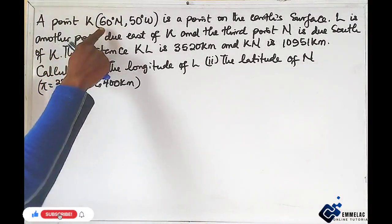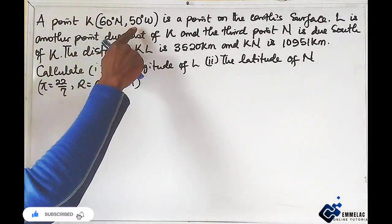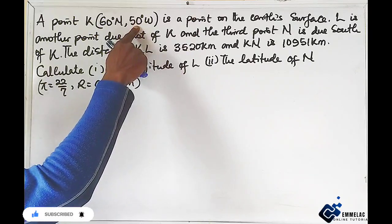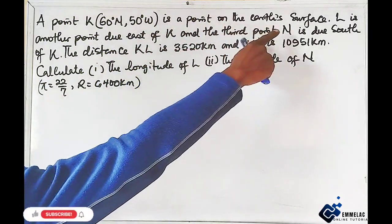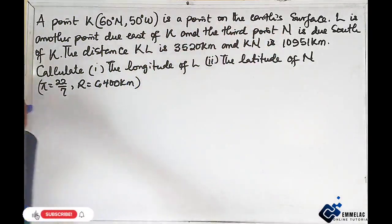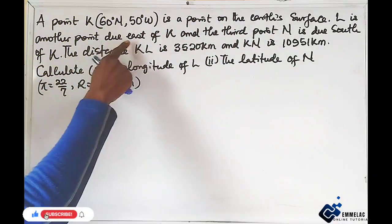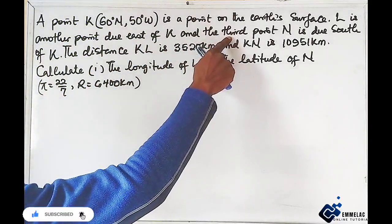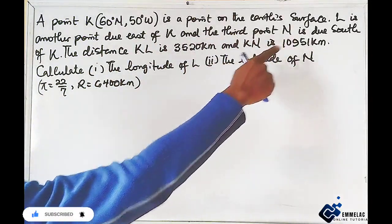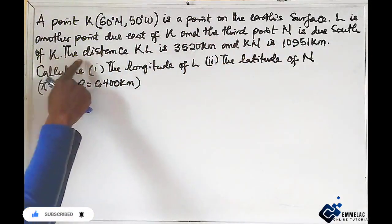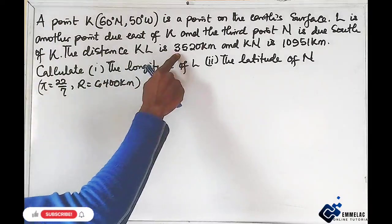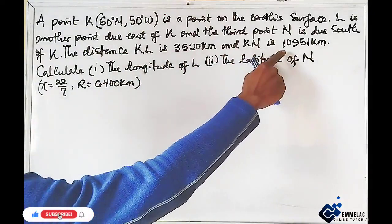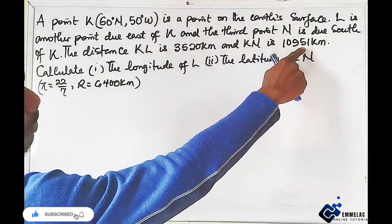The point K with latitude 60 degrees north and longitude 50 degrees west is a point on the Earth's surface. L is another point due east of K and the third point N is due south of K.